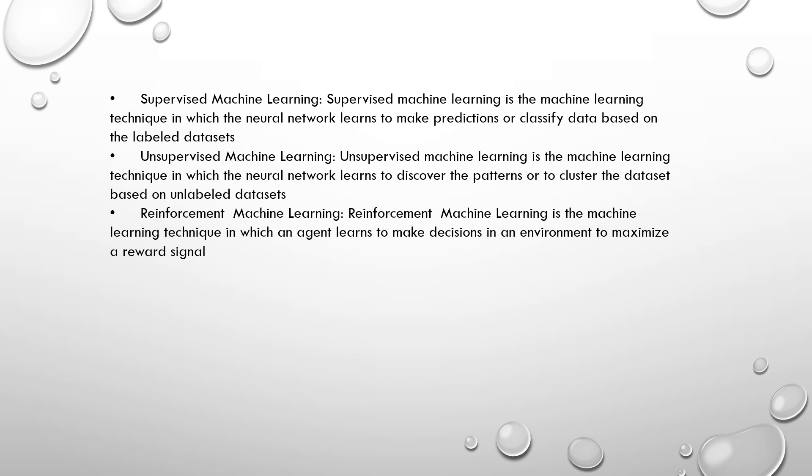First, supervised machine learning: supervised machine learning is the machine learning technique in which the neural network learns to make predictions or classify data based on labeled datasets. Second, unsupervised machine learning: unsupervised machine learning is the machine learning technique in which the neural network learns to discover patterns or cluster the datasets based on unlabeled datasets. Last, reinforcement machine learning: reinforcement machine learning is the machine learning technique in which an agent learns to make decisions in an environment to maximize a reward signal.